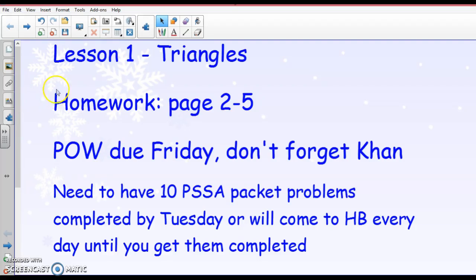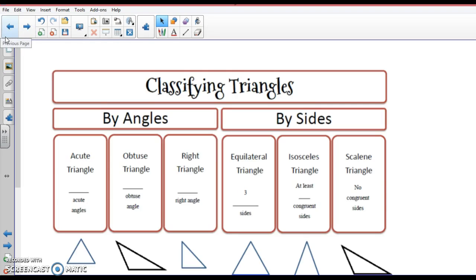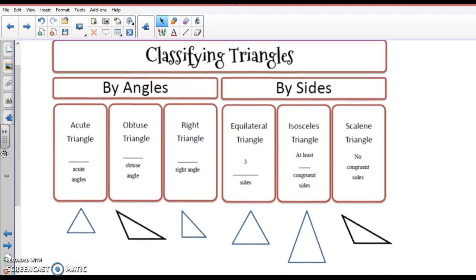Alright, this is lesson 1 in frame geometry. The homework that goes with this is page 2 to 5. Ignore this homework because it varies by year. The first lesson on the first page of the note is classifying triangles. There's two ways to classify it: by the size of the angle and by the size of sides.